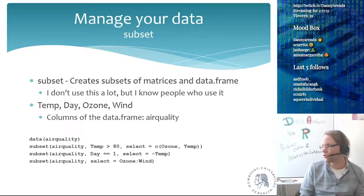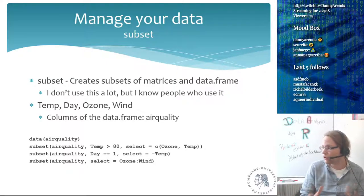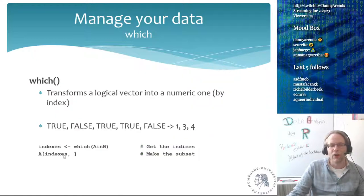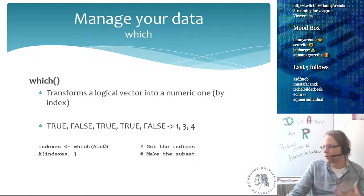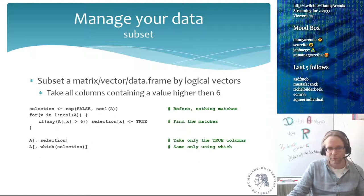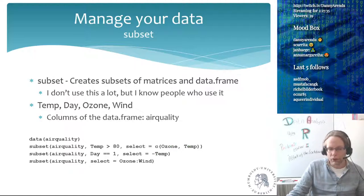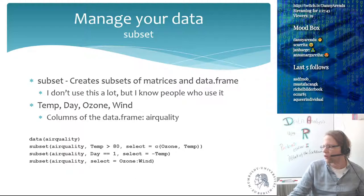A lot of people like this approach. I'm not the biggest fan, but I want to show you that `subset()` can do the same thing as using `selection` or the `which()` structure where you directly specify selection criteria. We'll return to the air quality dataset when we get to plots — using it as an example to show relationships between days, wind, ozone, and temperature.